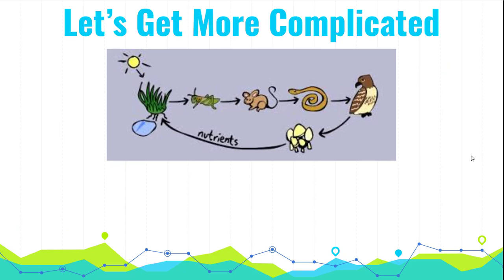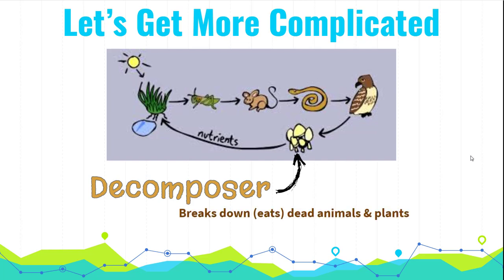So there's a couple ways our food chain or our food web can be a little bit more complicated. The first way is by the addition of a decomposer. A decomposer breaks down or eats the dead animals or plants. So it's why you don't just see dead animals always on the side of the road. Something eventually happens to that dead animal. It's broken down and the matter becomes part of the soil that then acts as nutrients for the plants to grow. Most decomposers are fungi or bacteria.